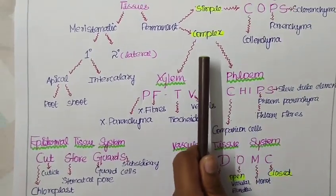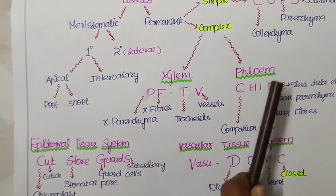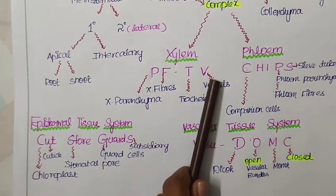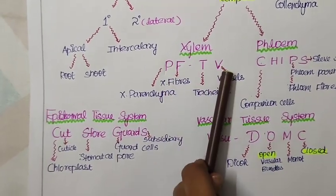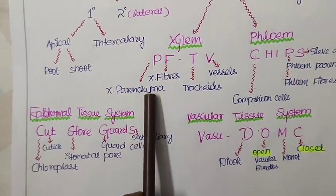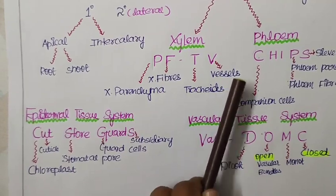This is the trick for simple permanent tissue. Now to talk about the complex permanent tissue, it is divided as xylem and phloem. In xylem the short trick will be PFTV. We are buying TV in the PF menu. Here P stands for parenchyma, xylem parenchyma and F for fibers that is xylem fibers. T for tracheids and V for vessels.